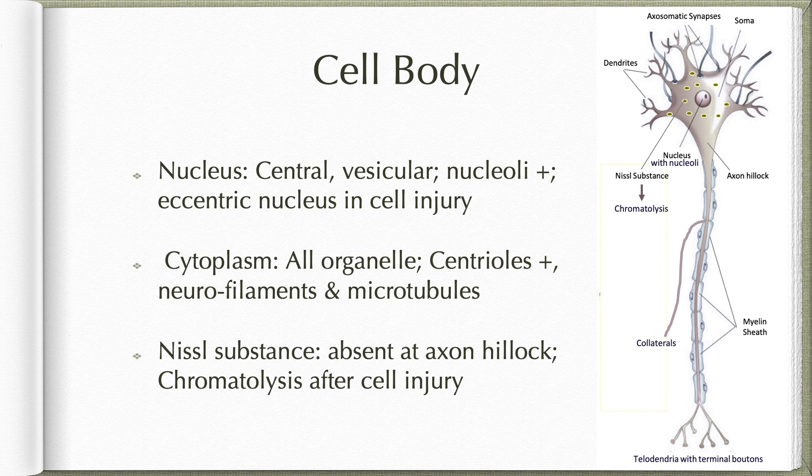The cell body contains a central vesicular nucleus with prominent nucleoli. An eccentric nucleus usually indicates cell injury. The cytoplasm contains all regular organelles including centrioles, neurofilaments, and microtubules.